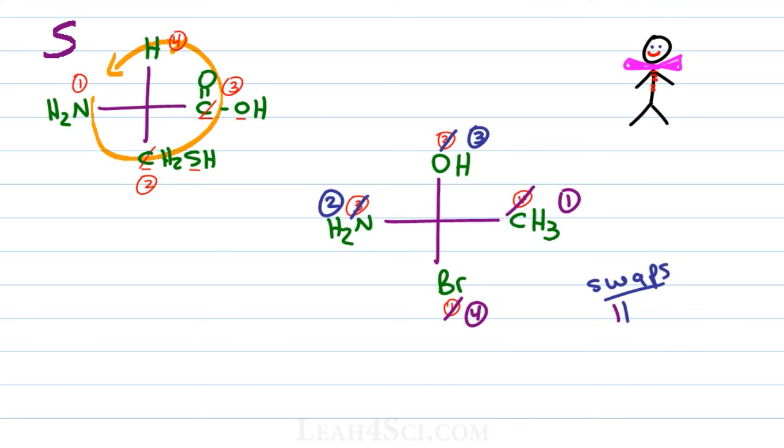That gives me a total of two swaps which is an even number meaning the chirality of this order is the exact same as what we started with. We cancel out number four and trace a path from one to two to three. This molecule is R.